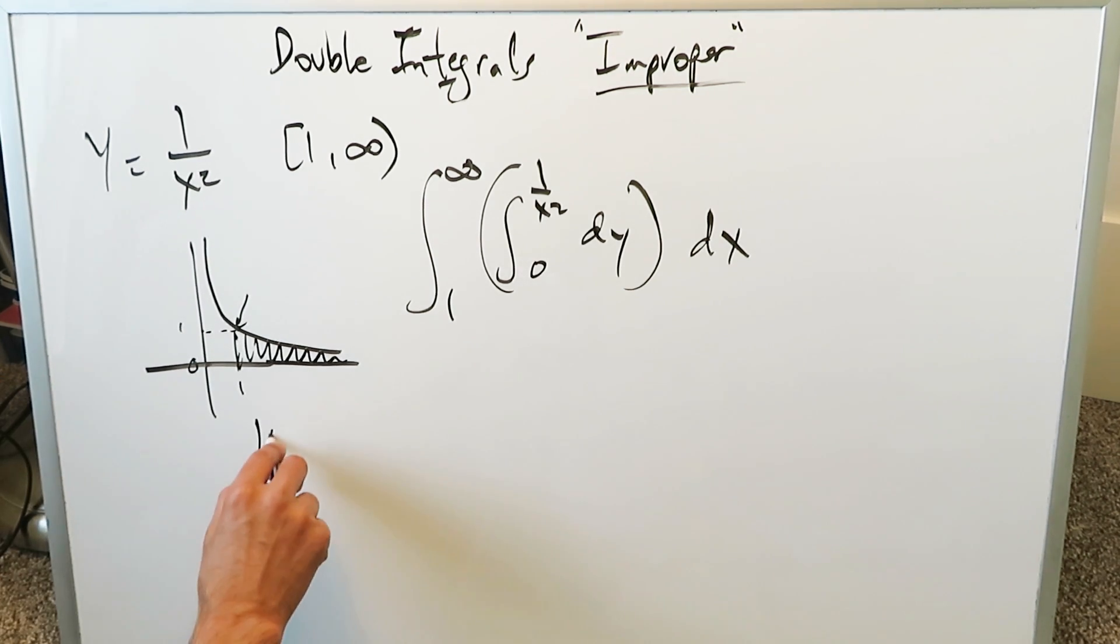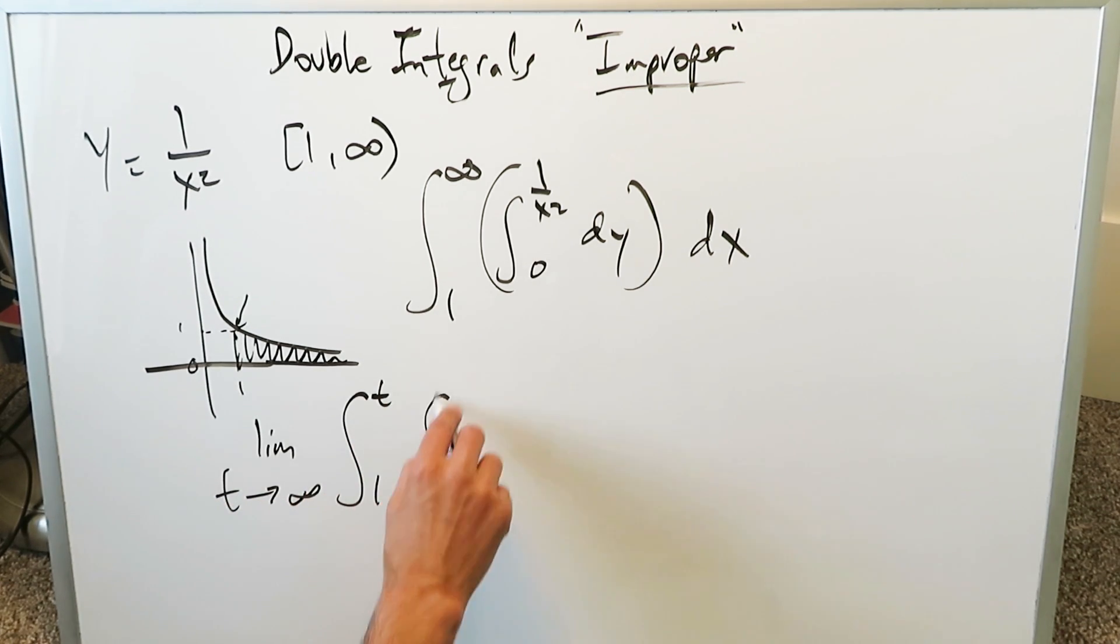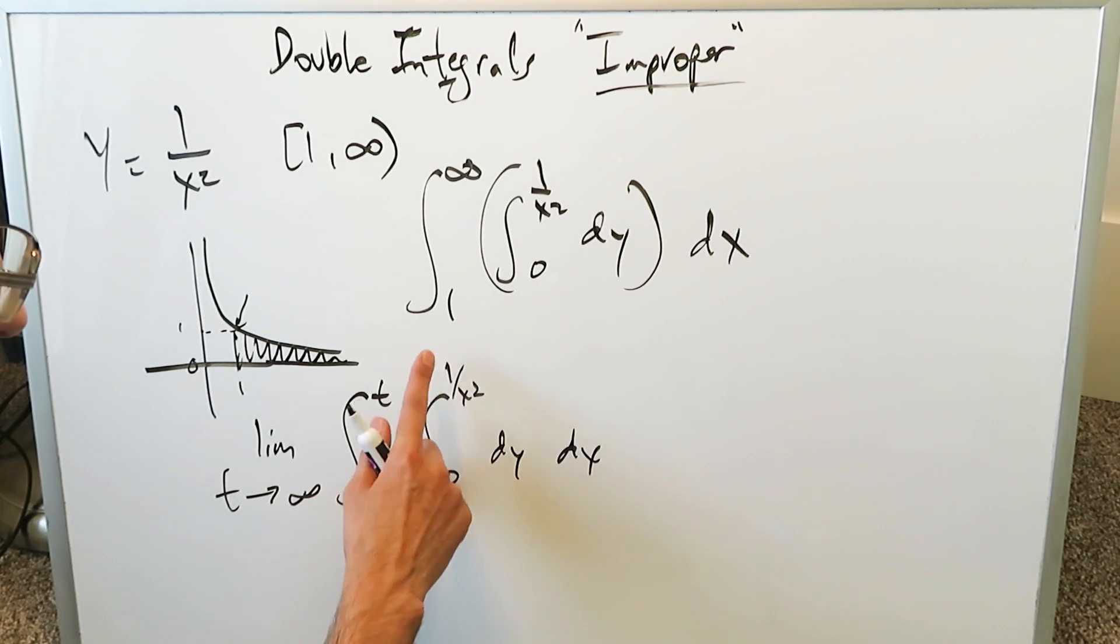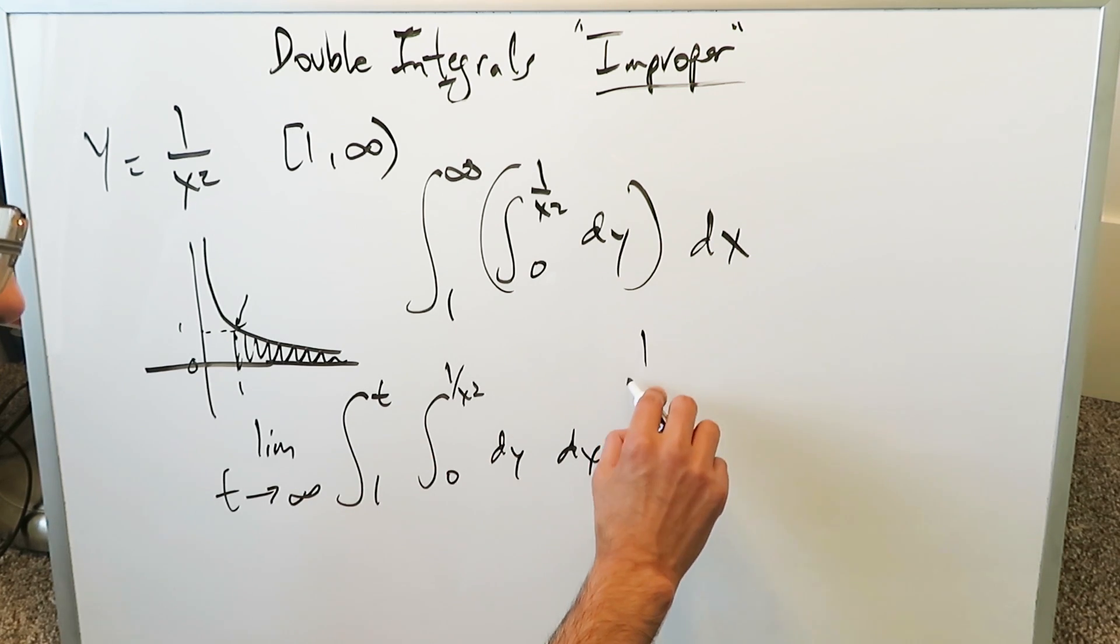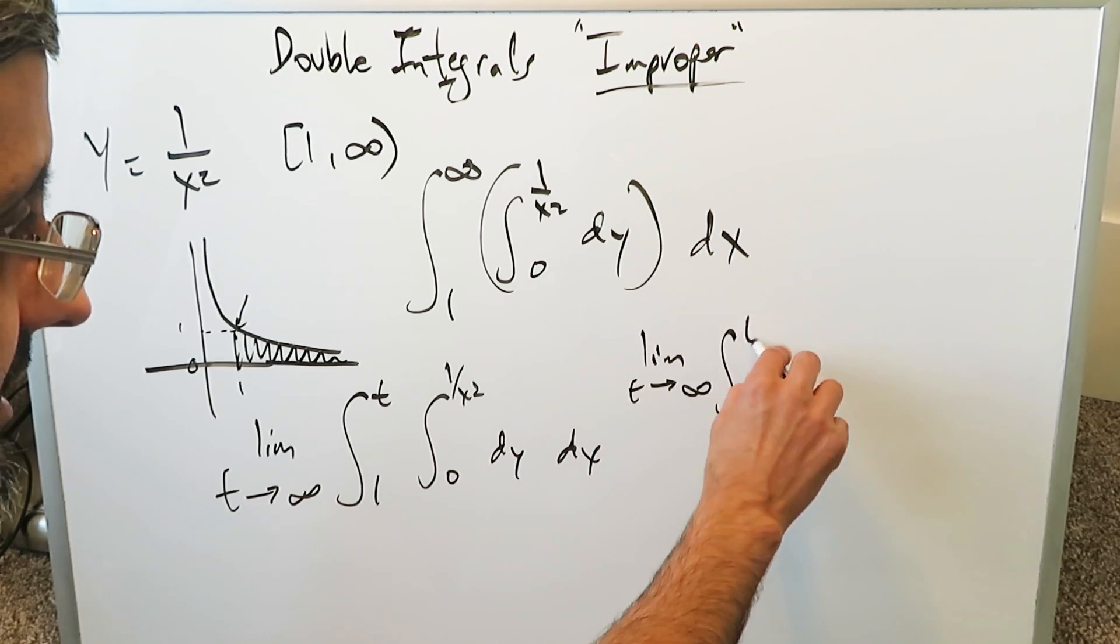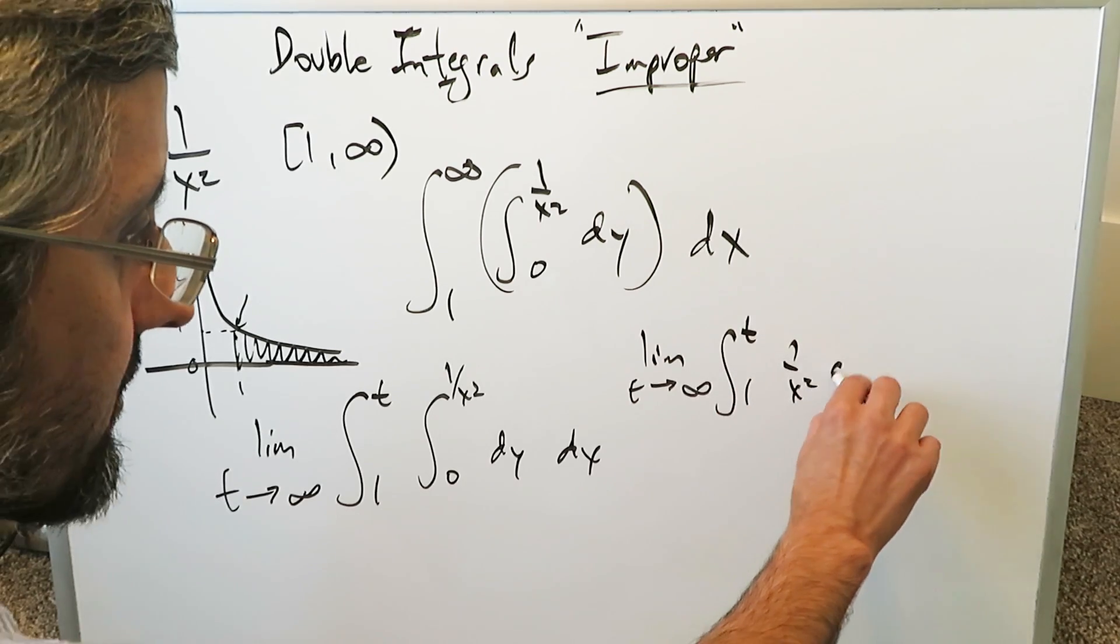You can formalize it by saying limit as t approaches infinity, and then you're looking from 1 up to t, you have 1 over x squared, 0 dy dx. The antiderivative from here is just y. You do the upper, the lower, you'll just get 1 over x squared. Limit as t approaches infinity, you end up with integral from 1 to t of 1 over x squared dx.